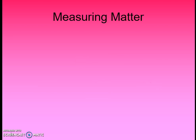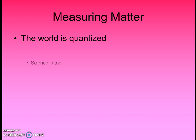Why is taking measurements of matter important? The world in which we live in is quantized. Everything involves numbers, whether it's how far you need to travel, how much money you need to save for that new iPhone, or how long you have to wait for your favorite show on TV. In science, everything is quantized too. Experimental science involves taking a lot of measurements, doing a lot of calculations, and using numbers to get to a final result.